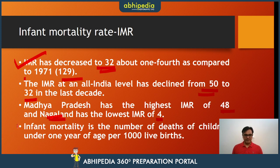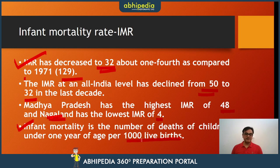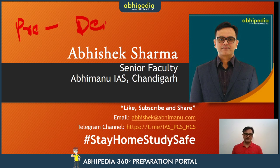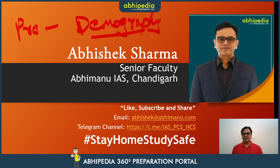So all this data — birth rate, death rate, and IMR — all three datasets that have been released are calculated per 1000 population. I hope you have understood all of this recent data. Please update your notes quickly. This data is very important for your prelims as well as mains — in the demographics topic, you need to upload and update all of this data.